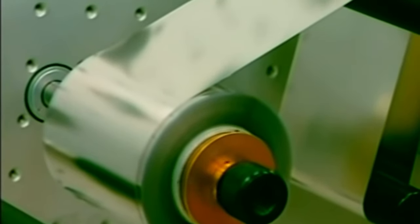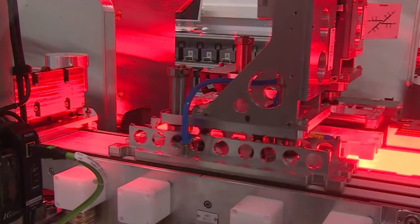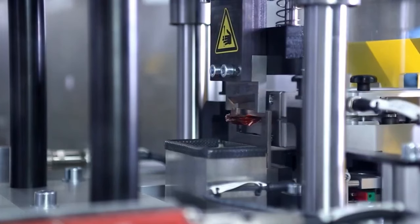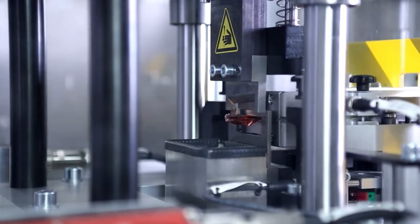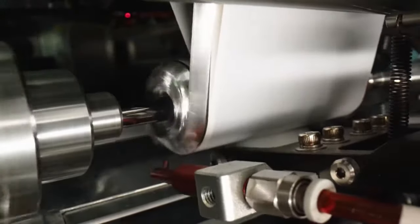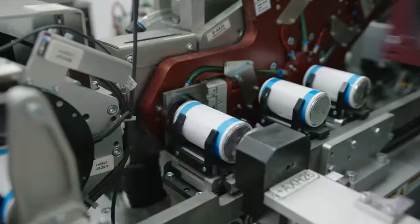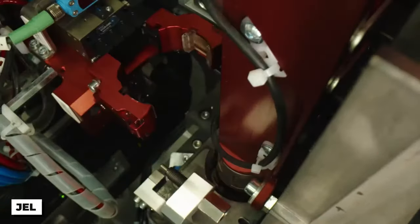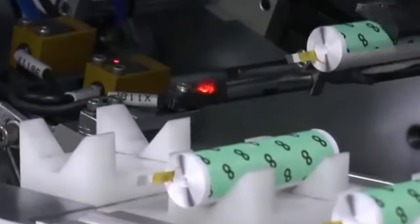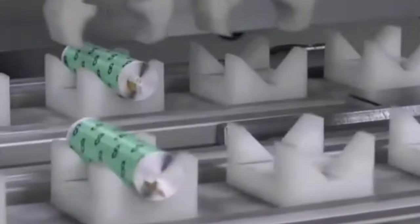Subsequently, the coated electrodes undergo compression in a calendaring machine to increase the density of the electrode materials, thereby enhancing their overall performance. Now moving on to cell assembly. These coated materials are stacked together with separators to form what's known as the jelly roll. This roll is then sealed in a pouch or cylindrical casing to prevent any leakage of the electrolyte. It's a crucial step that sets the stage for the battery's performance.